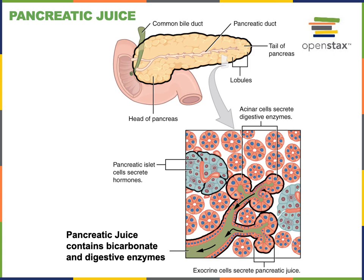These pancreatic proteases are secreted as inactive precursors that then become activated in the duodenum. This is important because a protease could digest the structural and functional proteins important for the acinar cells. If the proteases became activated and started breaking down proteins inside the acinar cells, essentially the pancreas would be digesting itself. To prevent this, pancreatic proteases are secreted as inactive precursors.